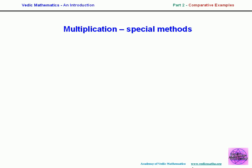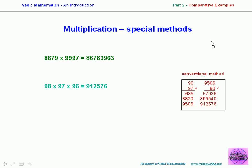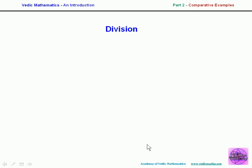There are many special types of multiplication in the Vedic system. Numbers close to a base such as 10,000 can be multiplied very easily, whereas the conventional method involves ordinary long multiplication with large digits. Multiplying three numbers near a base can be written straight down in Vedic, but conventionally requires two separate multiplications. We can also handle two numbers near different bases, such as 600 and 400, and there are many other special multiplication types available.